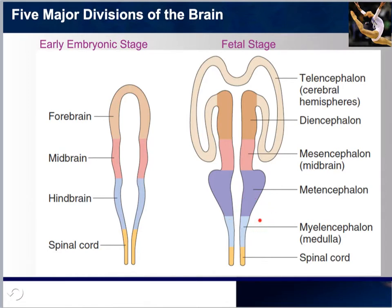One way to memorize these divisions is that they are all in alphabetical order, except for the cerebral cortex, which is the telencephalon. Other than that, every single one of these is in alphabetical order. The spinal cord is at the bottom.